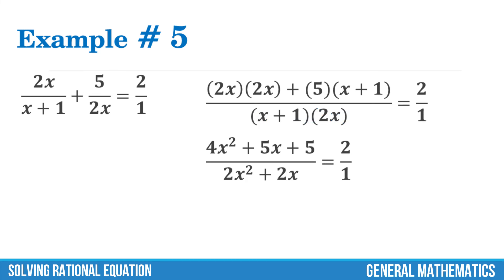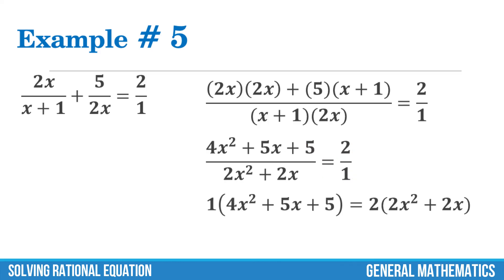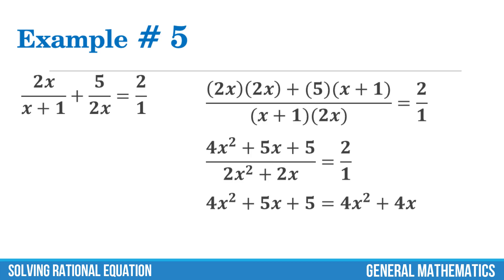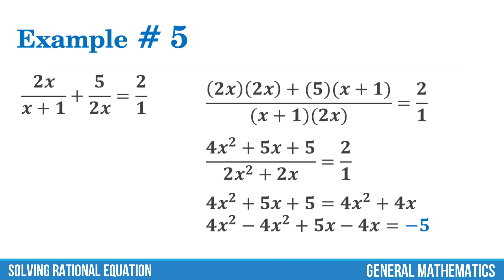Now, let us cross multiply. Transpose 4x squared and 4x so that all terms with variables will be grouped together, and transpose 5 to the right-hand side. Now simplify. The value of x is negative 5.